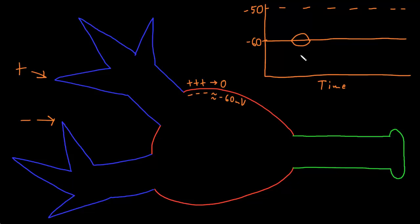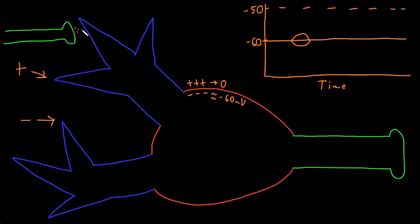This adding together of graded potentials is called summation, and summation at the trigger zone is how neurons process information from their inputs. Most neurons respond to inputs from other neurons in the form of neurotransmitter molecules released at synapses. An axon terminal of another neuron may release neurotransmitter at a synapse, which binds to receptors on the membrane — in this case on a dendrite — producing some kind of graded potential. Depending on the neurotransmitter and the receptor, this may be an excitatory or an inhibitory input.